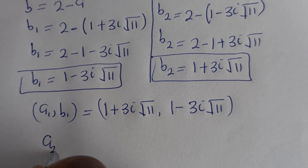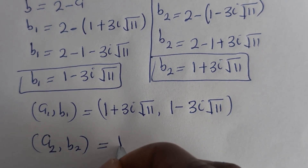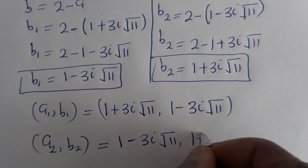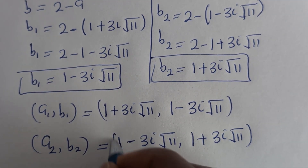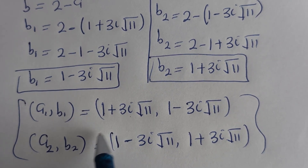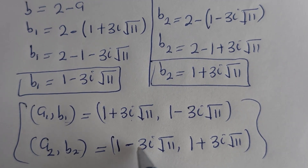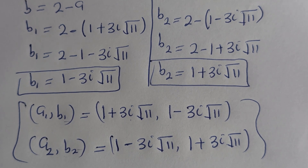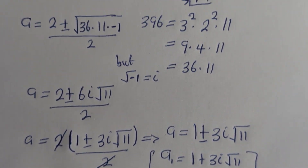Therefore our final answers are: A1, B1 equals (1 plus 3i square root of 11, 1 minus 3i square root of 11), and A2, B2 equals (1 minus 3i square root of 11, 1 plus 3i square root of 11). You can see that the value of A1 equals the value of B2, and the value of B1 equals the value of A2. If you check using either of these you will still get the right answer. I hope you enjoyed this — thank you for watching, please don't forget to like, share, comment and subscribe to my channel. Bye.